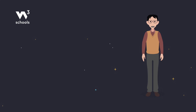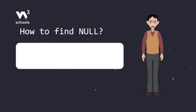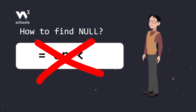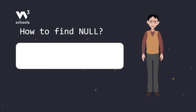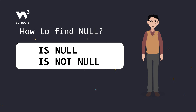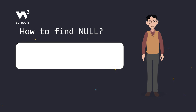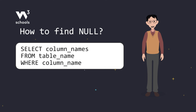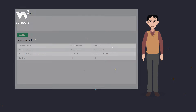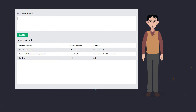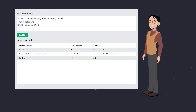How do we find these mysterious null values in our data? You might think you could use the usual comparison operators like equals or less than, but null needs special treatment. Instead, we use the IS NULL and IS NOT NULL operators. Let's take a look at the syntax. You use IS NULL in your WHERE clause to find all the records where the value is missing. For example, if we want to find all customers who didn't provide an address, we'd run a query like this. This would return only the customers with a null value in the address field.